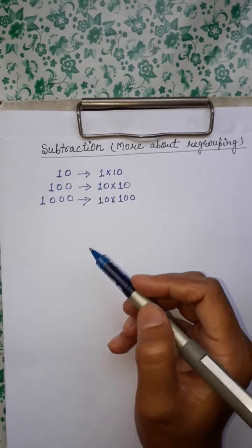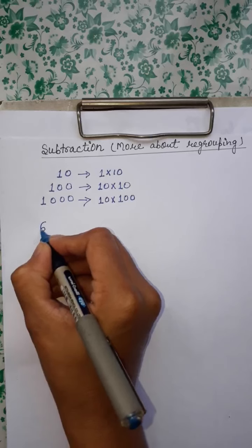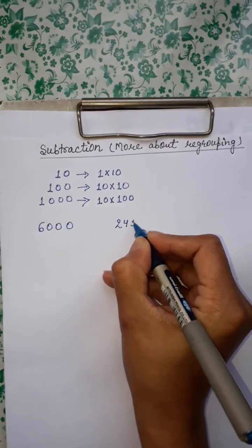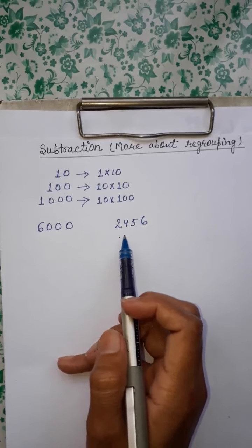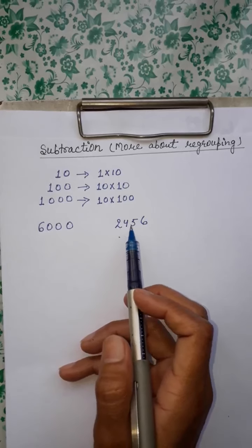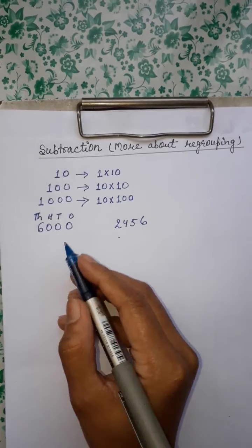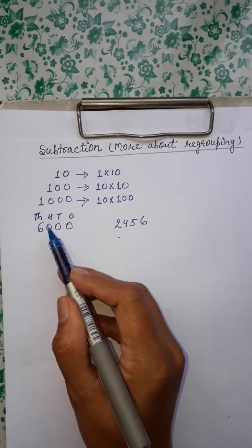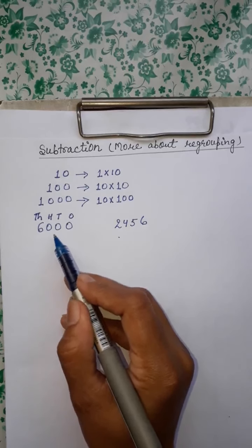Now I am taking two numbers: 6,000 and 2,456. 6,000 is greater than 2,456 — that means humein 6,000 mein se 2,456 ko subtract karna hai. But the problem is that I have 0 at the 1s, 10s, and 100s place in 6,000.